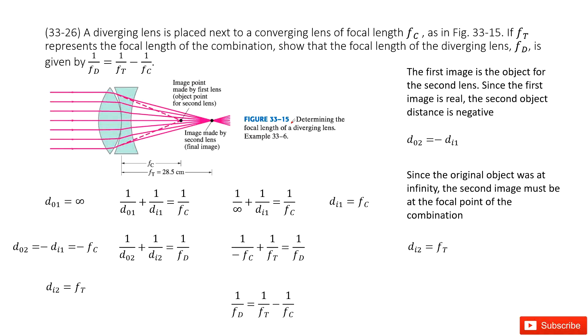Let's look at problem 26 in chapter 33. Chapter 33 is about lens and optic instruments. So you can see we have this system. It will tell us a divergent lens is placed next to a convergent lens. The picture is shown there.